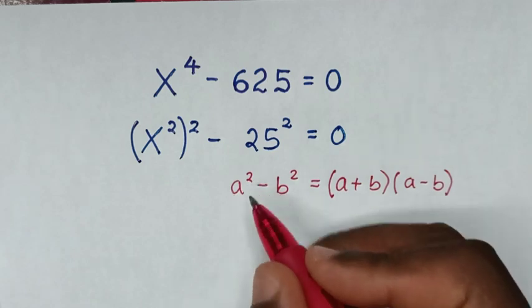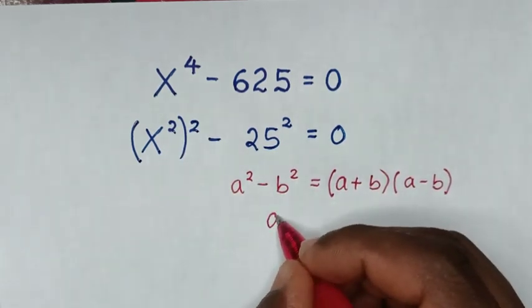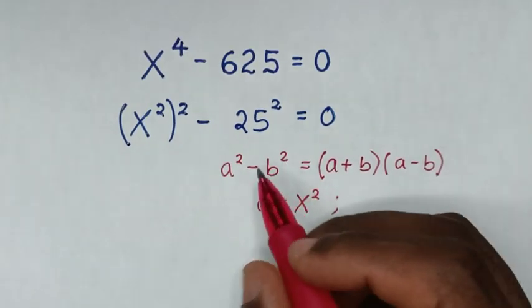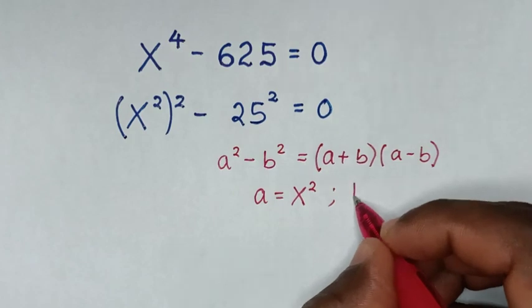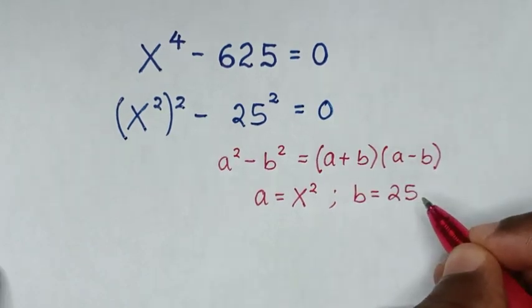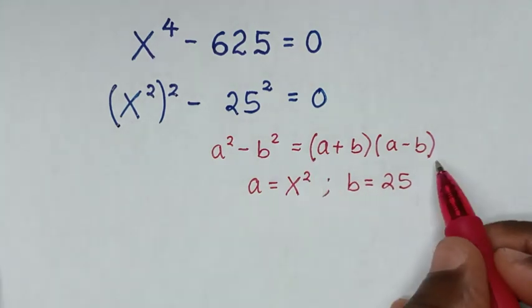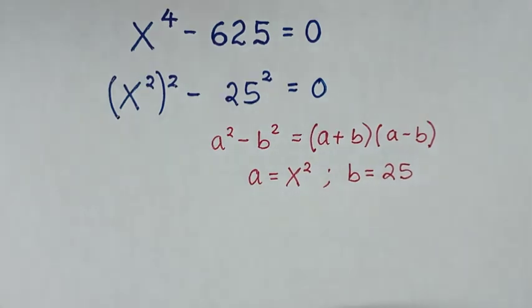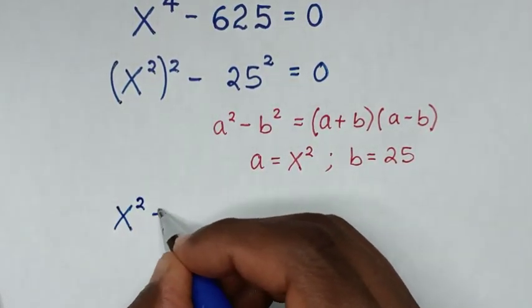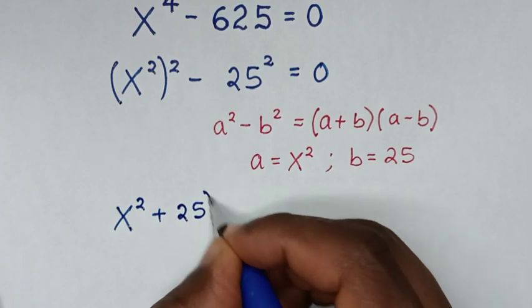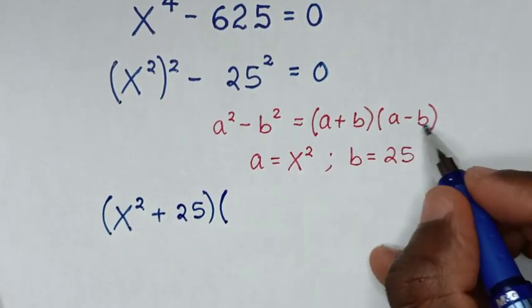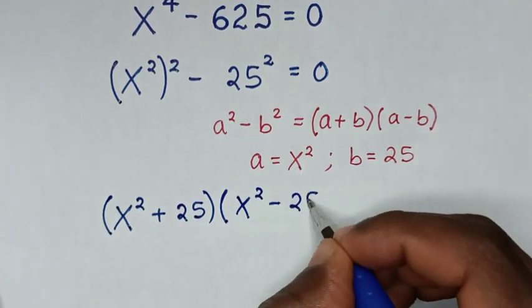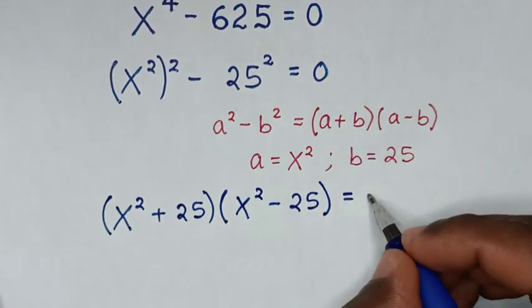When we compare a squared with (x squared) squared, then a is equal to x squared. And when we compare b squared with 25 squared, then b is equal to 25. Applying this form, we get (x squared plus 25)(x squared minus 25) equals 0.